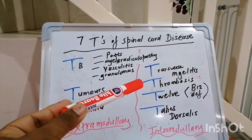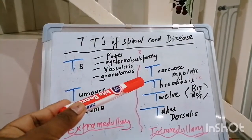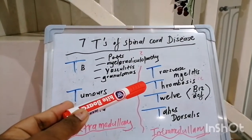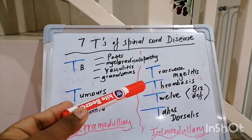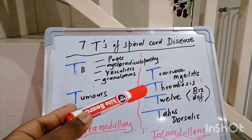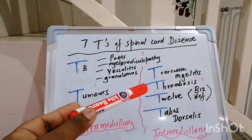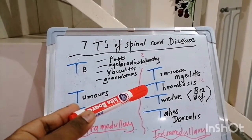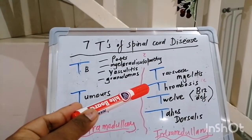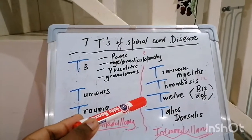Thrombosis typically causes either anterior or posterior spinal artery affectation. The classic hallmark for anterior spinal thrombosis is sparing of the posterior columns — so you have involvement of the spinothalamic tract and the corticospinal tract, but sparing of proprioception and joint position sense.